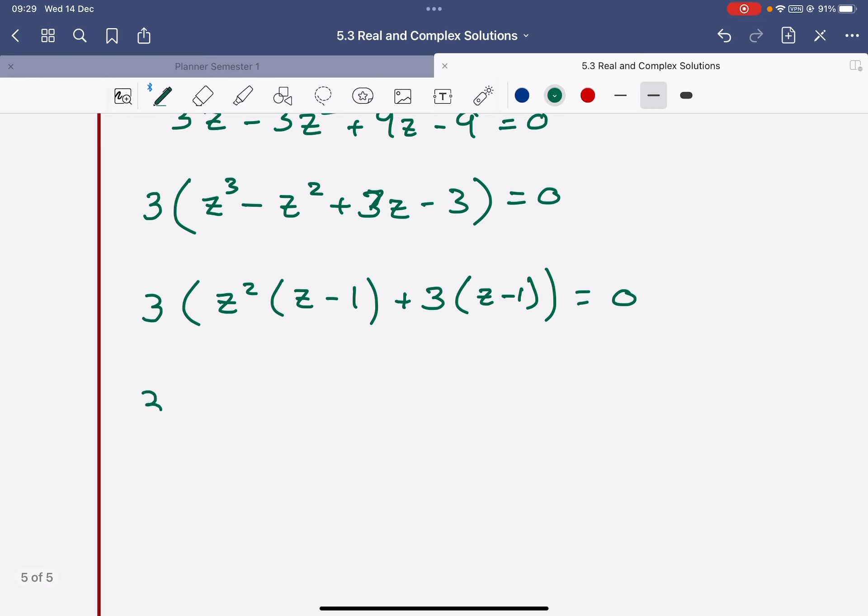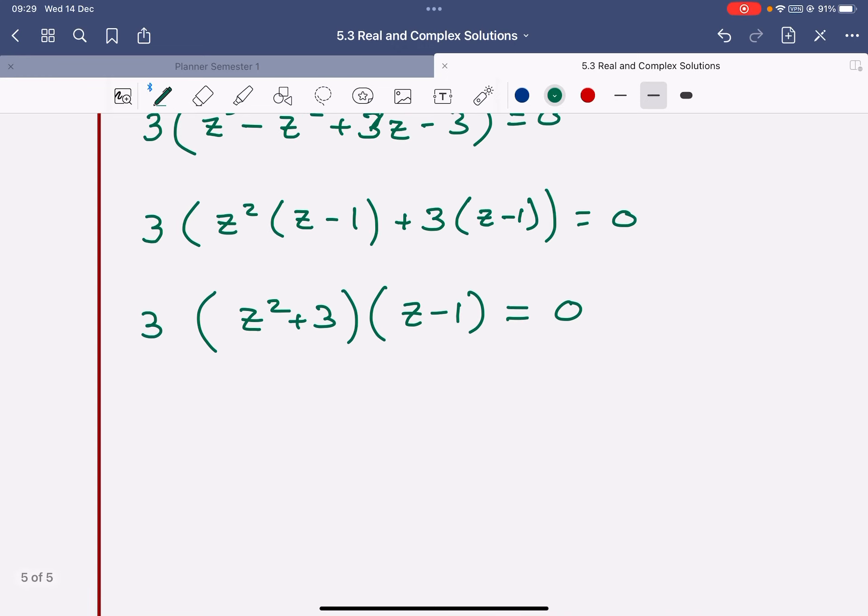Actually, this 3 is kind of superfluous at the moment. It's not needed because I'm going to divide both sides by that 3. And I have z squared plus 3 equal to 0. So z equals the square root of negative 3. So plus and minus square root of negative 3. There's two of my answers.